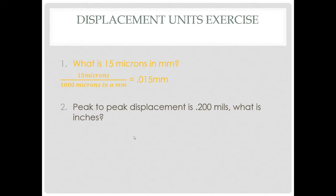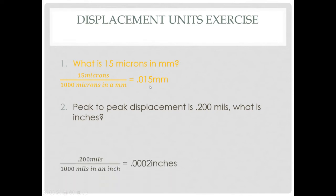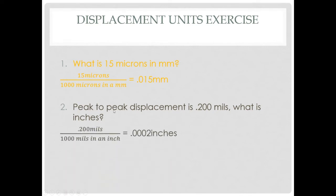Another example: if the peak-to-peak displacement is 0.2 mils, what is it in inches? With a thousand mils in an inch, that's 0.0002 inches. Velocity units — velocity is the rate of change of displacement, measured in millimeters per second or inches per second. Acceleration is the rate of change of velocity. Keeping in mind that as we go up and down the hills of the sine wave, velocity is constantly changing — this means acceleration also changes. Units for acceleration can be g's, millimeters per second, or inches per second.